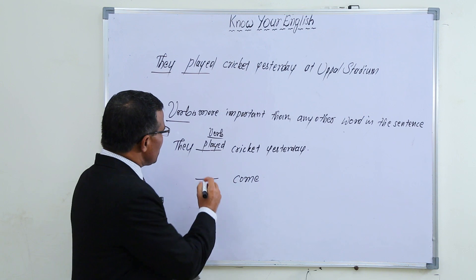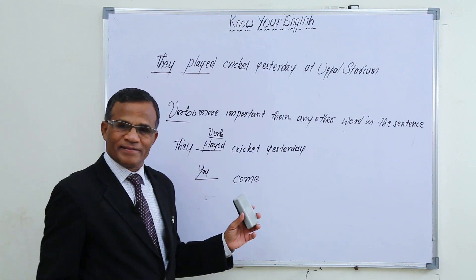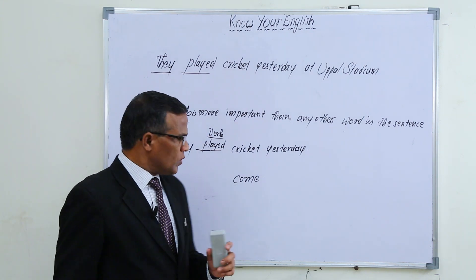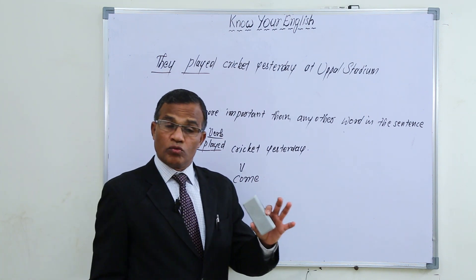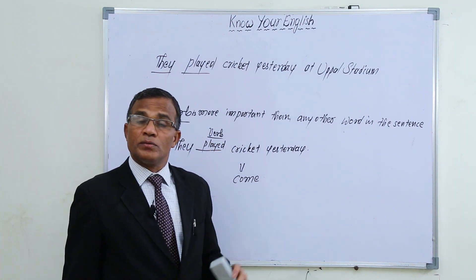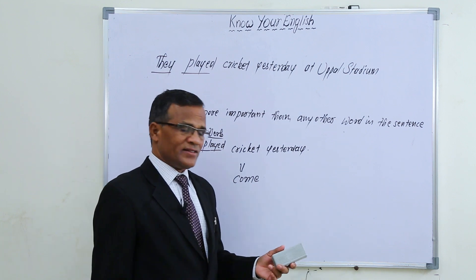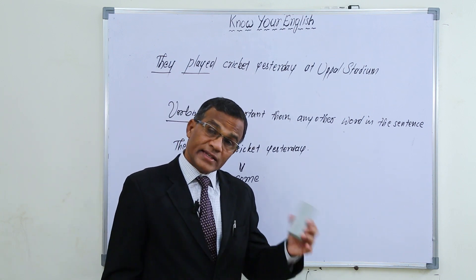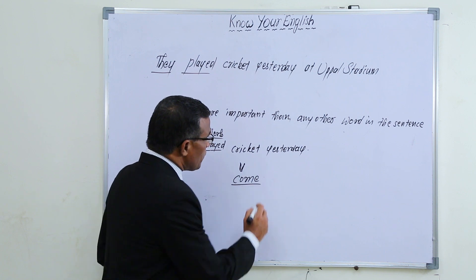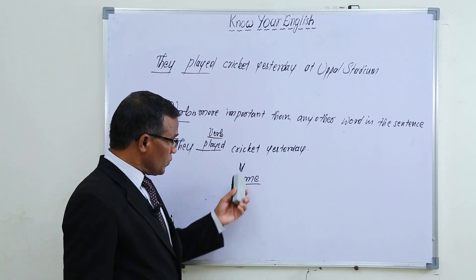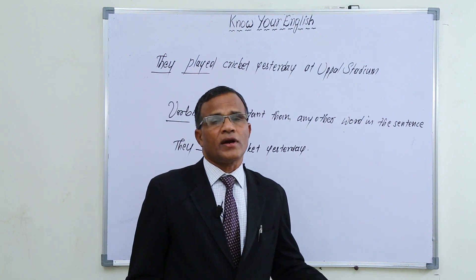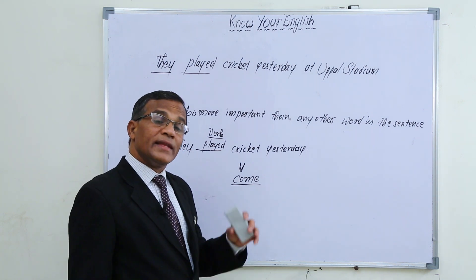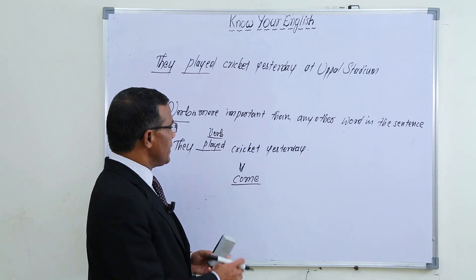One more thing: the subject is important, but sometimes even if it is missing, by using only the verb I can give the whole sentence its meaning. So sometimes a simple verb alone frames a complete sentence. In this way the importance of verb is very clear — if the verb is not there, the meaning of the sentence is not clear.